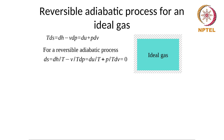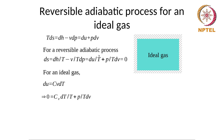For an ideal gas, the internal energy is a function only of temperature, and enthalpy is also only a function of temperature. So for an ideal gas, du = Cv dT. Substituting this back into the expression, we get 0 = Cv dT/T + (P/T) dV.